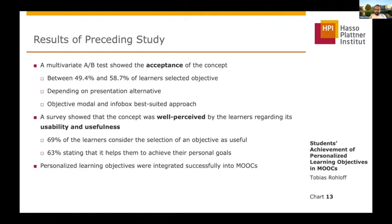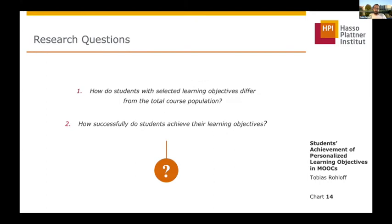In this study we focused on two research questions: how do students with selected learning objectives differ from the total course population, and how successfully do students achieve the learning objectives?